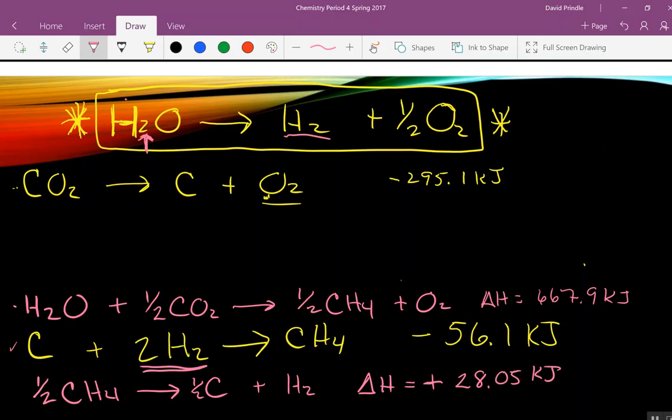So, we had to flip the equation to get the hydrogen on the right side. And we had to halve it to get the right number of hydrogens. Because we did that, we had to decrease our delta. Oh, did I forget to cut the 667 in half? I think I did. Thank you for noticing. I forgot to cut the 667 in half. Nobody noticed except Bree.